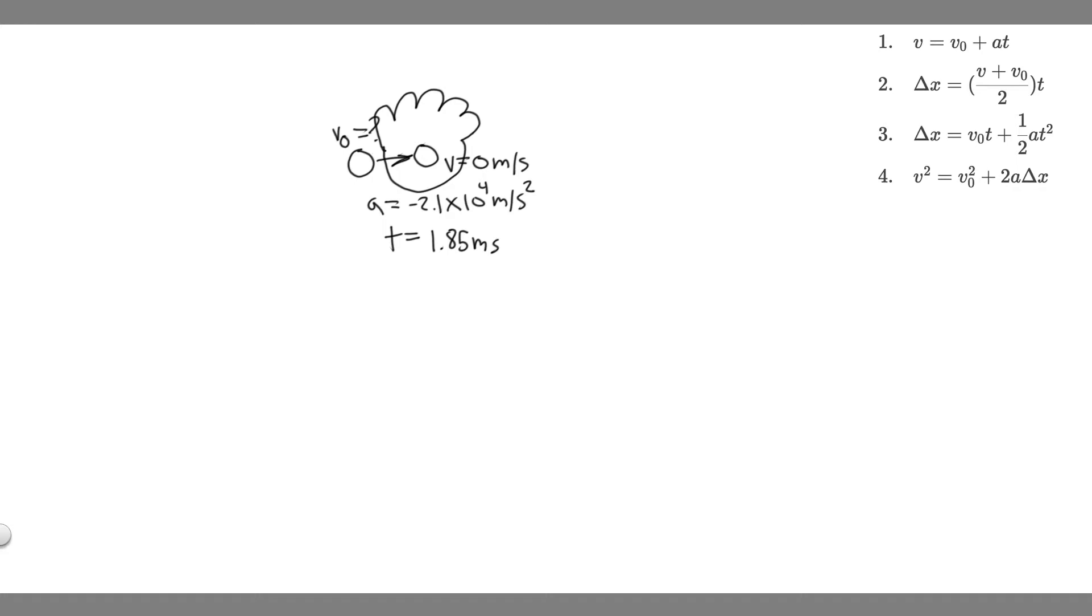The first thing you always want to do is draw what's going on. So we have this ball with some initial velocity, and that's what we're trying to solve for. It's going to be thrown in this mitt and it's going to decelerate. So its acceleration is going to be negative 2.1 times 10 to the 4 meters per second squared, because deceleration is just negative acceleration. It's going to take 1.85 milliseconds for it to go to 0 meters per second, to stop and not move.